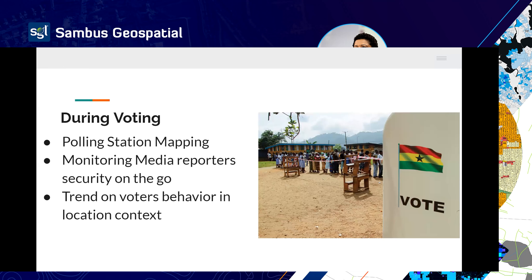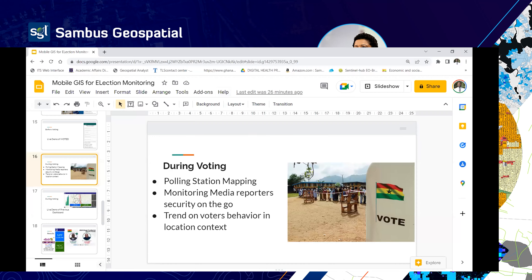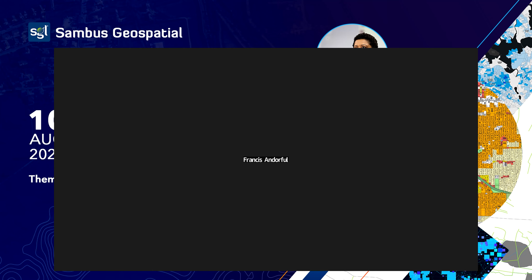We also provided a historical election dashboard: from 1992 all the way to 2016, we geocoded and created a dashboard for all election results over that period. With that election results data, the media house chat room used it to discuss issues relating to how things were going in those places, comparing historical results during the 2020 election.